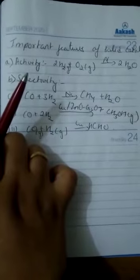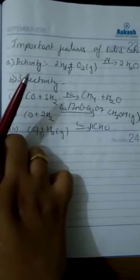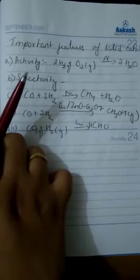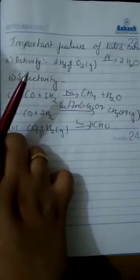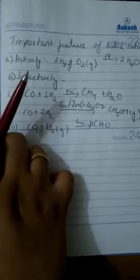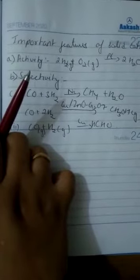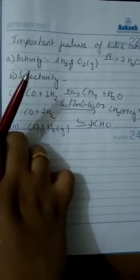However, they must not get adsorbed so strongly that they are immobilized and other reactants are left with no space on the catalyst surface for adsorption. As studied in the adsorption theory of heterogeneous catalysis, the bonds between molecules attached to the catalyst should not be too strong, otherwise they will not leave the surface and there will be no space for further reactions.